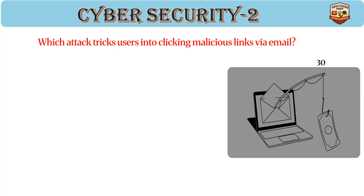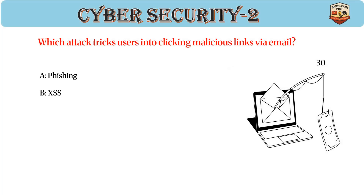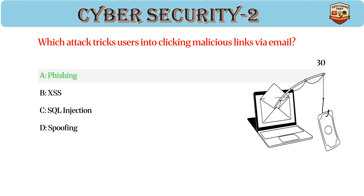Which attack tricks users into clicking malicious links via email? Answer: A. Phishing. Phishing uses fake emails or websites. Goal is to steal credentials or sensitive data. Prevented by user awareness and email filters.